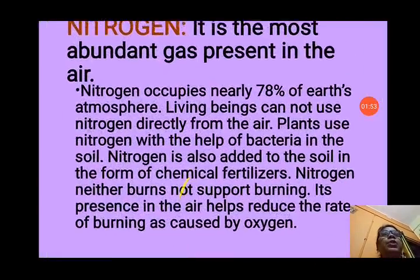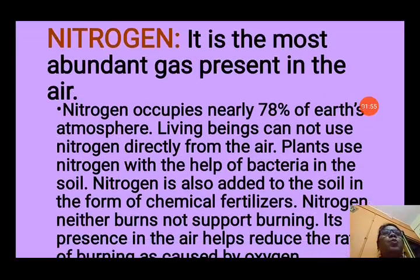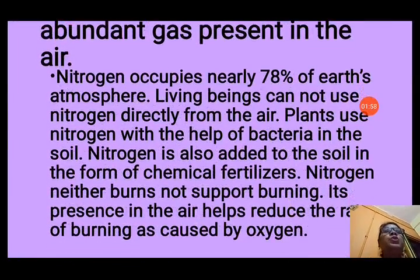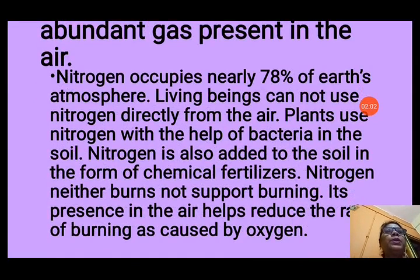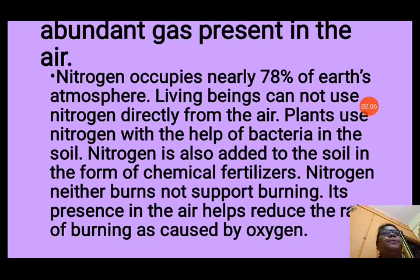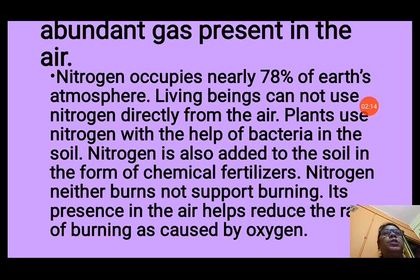The next important gas is nitrogen. It is the most abundant gas present in the air, occupying nearly 78% of Earth's atmosphere. Living things cannot use nitrogen directly from the air. Plants use nitrogen with the help of bacteria in the soil. Nitrogen is also added to the soil in the form of chemical fertilizers.